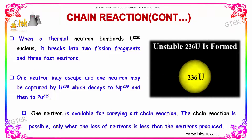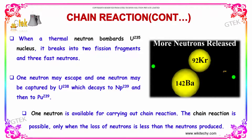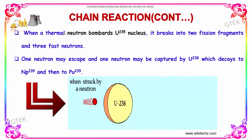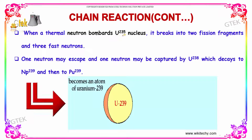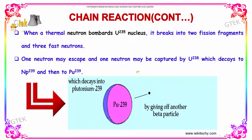One neutron is available for carrying out the chain reaction. The chain reaction is possible only when the loss of neutrons is less than the neutrons produced. When a thermal neutron bombards the uranium-235 nucleus, it breaks into two fission fragments and three fast neutrons, as shown here.